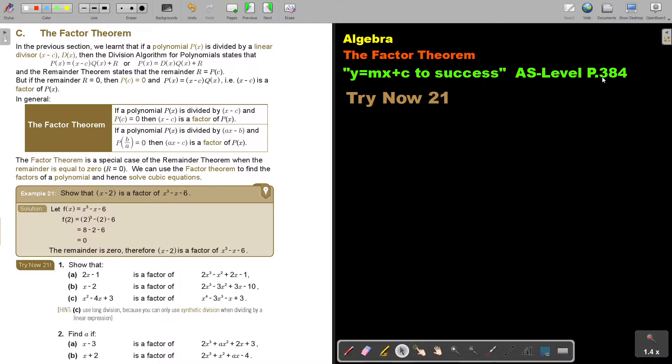You will find this on page 384 in the Namibia AS level mathematics textbook y equals mx plus c to success. The factor theorem. In the previous section, we learned that if a polynomial px is divided by a linear divisor x minus c or dx, then the division algorithm for a polynomial states that px equals the divisor times the quotient plus the remainder.